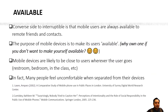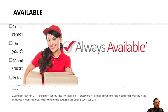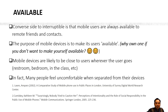Next we look at availability. On the converse side to interruptability, the mobile user is always available to remote friends and contacts. Whenever the mobile user is using their device, they have a signal to the network and have signaled to everybody that they are available. The sole purpose of owning a mobile device is to make the user available — if you do not want to be available, it is better not to use one at all.